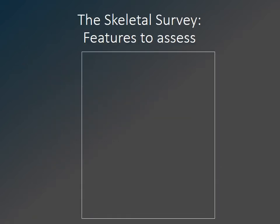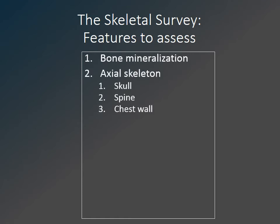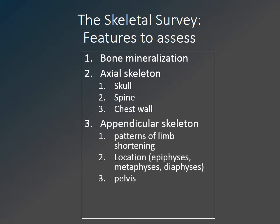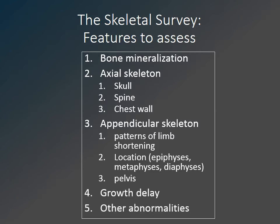We will now go through an overview of how to approach looking at a skeletal dysplasia. Rather than feeling overwhelmed by the number of images, we will simplify this approach to discuss five features to assess on any skeletal survey: bone mineralization; the appearance of the axial skeleton including skull, spine, and chest wall abnormalities; the appearance of the appendicular skeleton including patterns of limb shortening; the presence of normal growth or growth delay; and any specific or unique features about the skeleton or soft tissues.